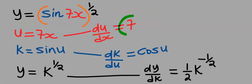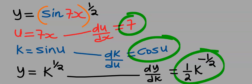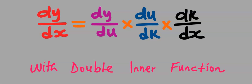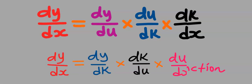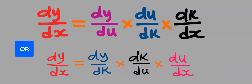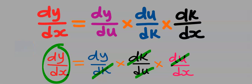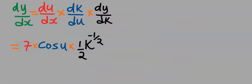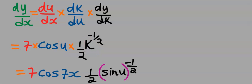Next we're going to multiply our results according to the chain rule formula with double inner function. It doesn't matter how you want to rewrite the inner function formula — you will still obtain your dy/dx. We have just applied the chain rule formula. Next we are going to simplify our results and replace the values of u and k.